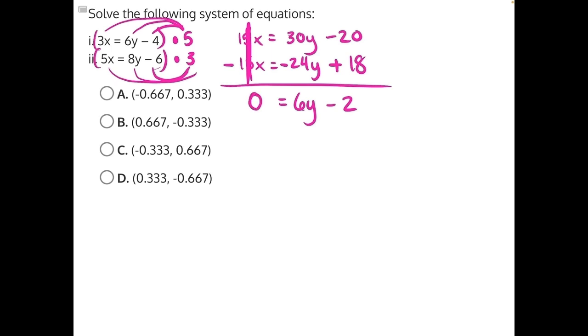Now if we want to work on isolating this y, we'll need to add 2 to both sides. These will cancel, leaving us with 2 is equal to 6y. And since 6 is being multiplied to y, the opposite operation here is division. These will cancel, leaving us with 2 over 6 is equal to y.